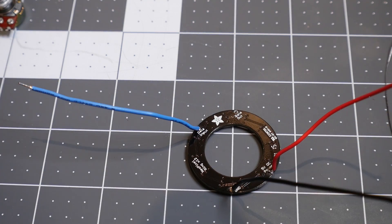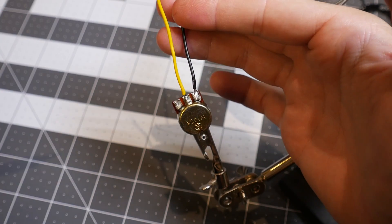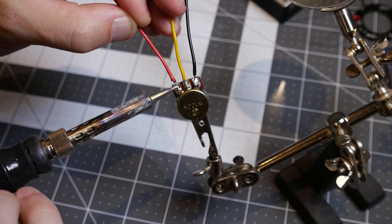A potentiometer is a variable resistor. You do power in from one side, ground on the other side, and then the lead in the middle sends out a different voltage based on how you have the potentiometer turned.